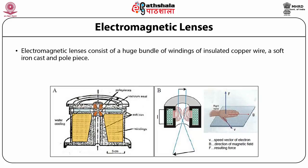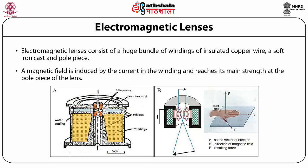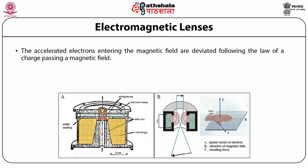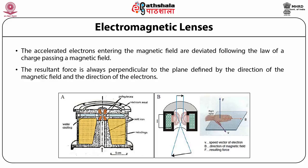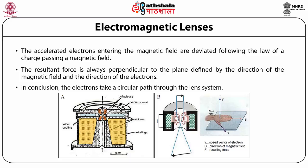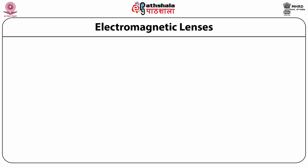Electromagnetic lenses consist of a large bundle of windings of insulated copper wire, a soft iron cast, and a pole piece as shown in the figure. A magnetic field is induced by the current in the winding and reaches its main strength at the pole piece of the lens. The accelerated electrons entering the magnetic field are deviated following the law of a charge passing through a magnetic field, and the resultant force is always perpendicular to the plane. The electrons take a circular path through the lens system.